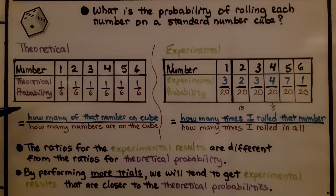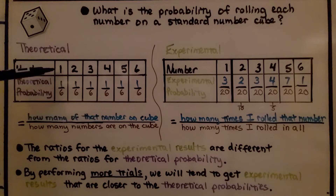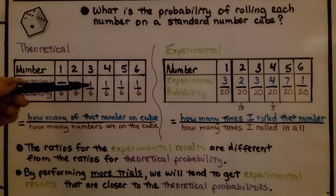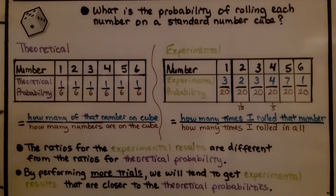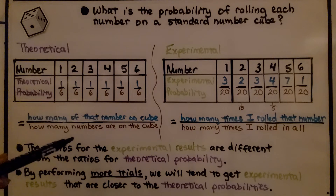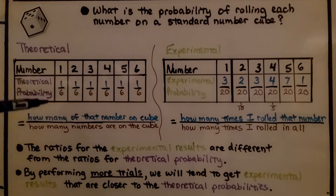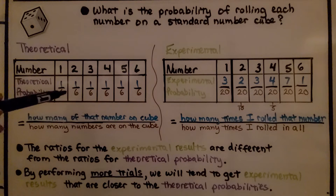It's equal to how many of that number are on the cube — there's only one of each. And how many numbers are on the cube in all? There are six numbers. So rolling a one would be one sixth, rolling a two would be one sixth, and so on.